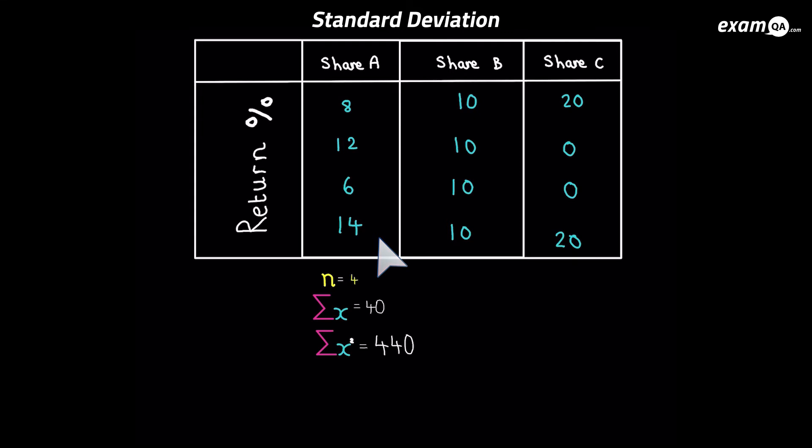Okay so for share A we've got how many terms there is, the sum of the values, and sum of the squares of all the values. Let's just go ahead and fill in the formula. And you can go ahead and just put that into your calculator. And that gives us 3.16. Let's do the same for share B.